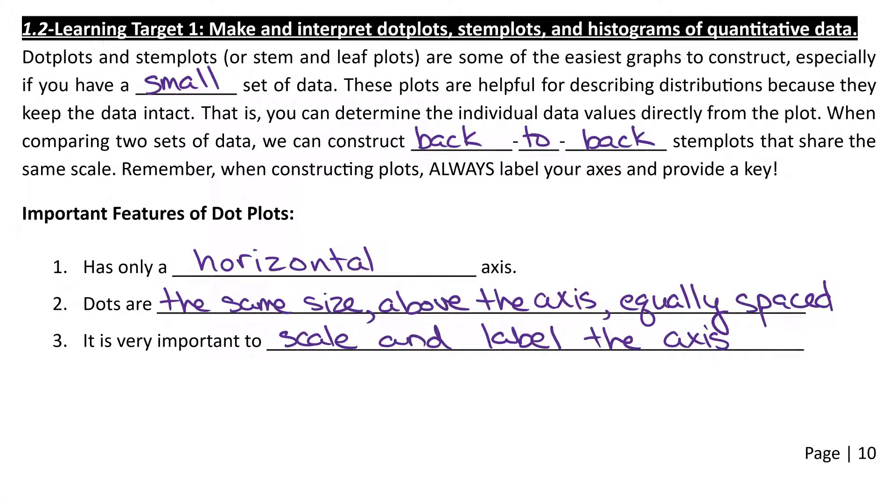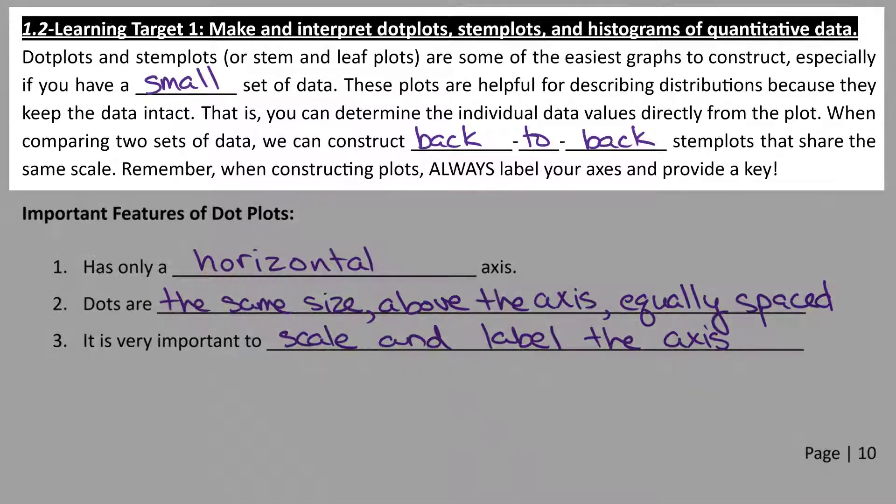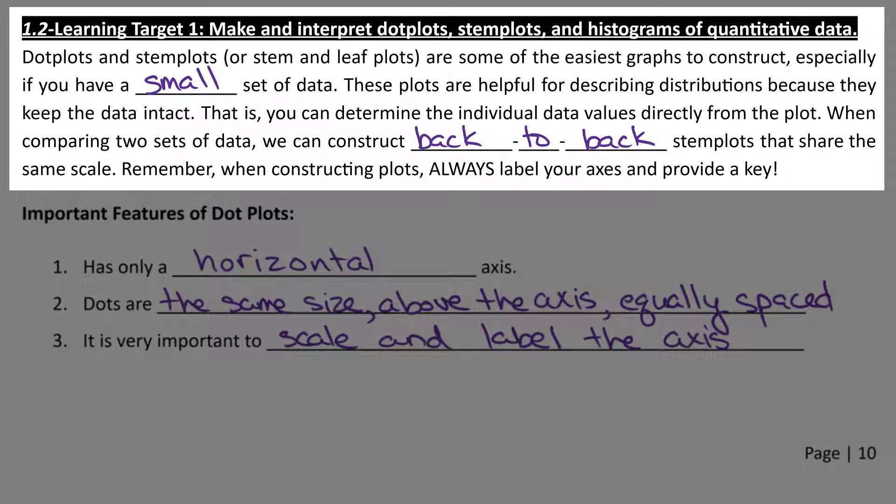So, now we're going to get into covering learning target number one: making and interpreting dot plots, stem plots, and histograms of quantitative data. These are going to be three of the four ways that you're going to learn to represent quantitative data graphically.